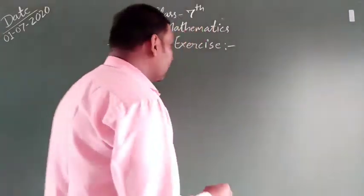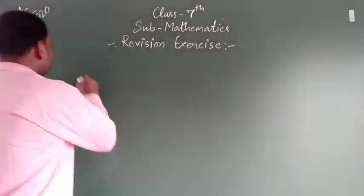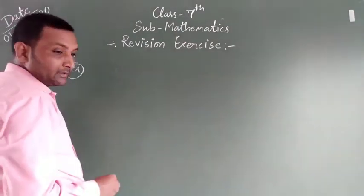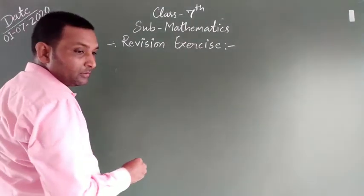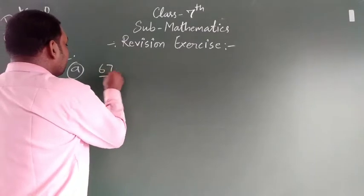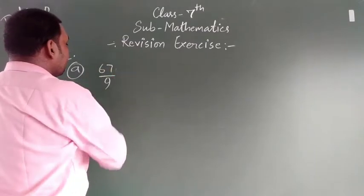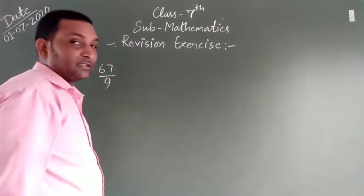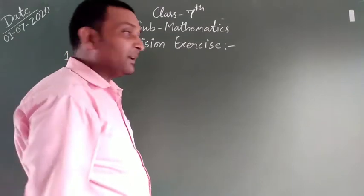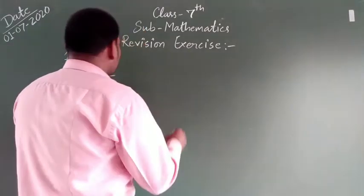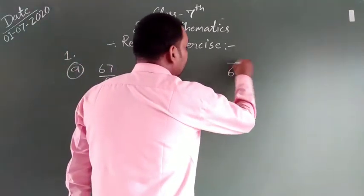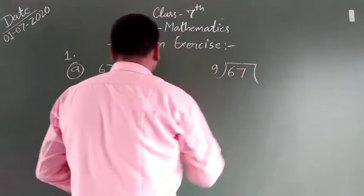Who is this? Mixed fraction. Question number: 67 upon 9. What do we do in mixed fraction? In mixed fraction, we divide. In 67, we divide by 9.